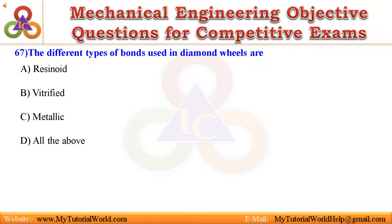67. The different types of bonds used in diamond wheels are: A. Resinoid, B. Vitrified, C. Metallic, D. All the above. Answer is All the above.